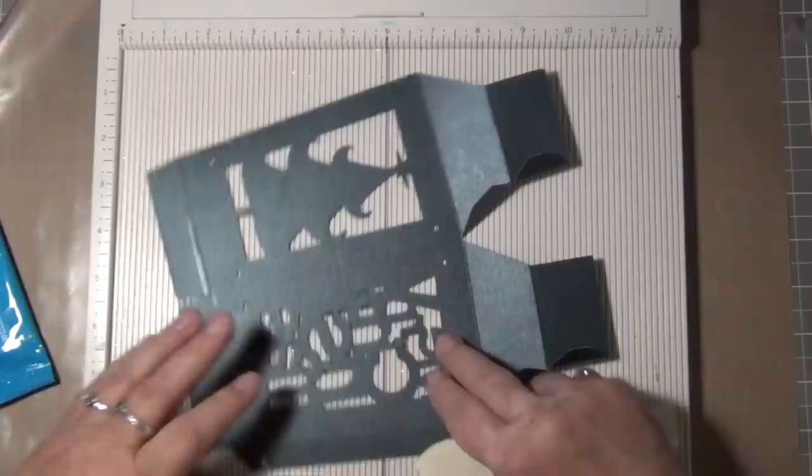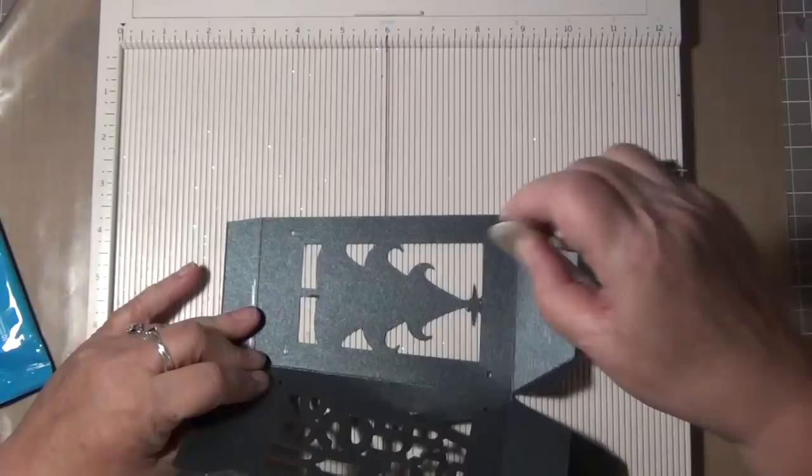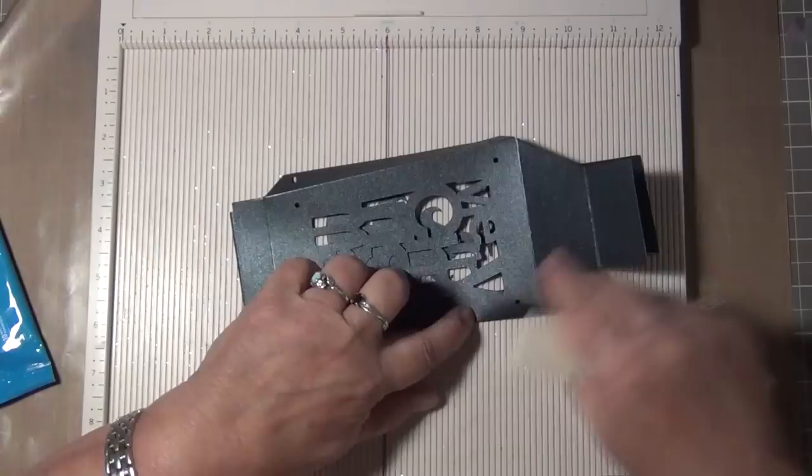You will notice that there are little holes on the side flaps. Those flaps will help you line up the two pieces together and to reinforce the pieces together with brads.